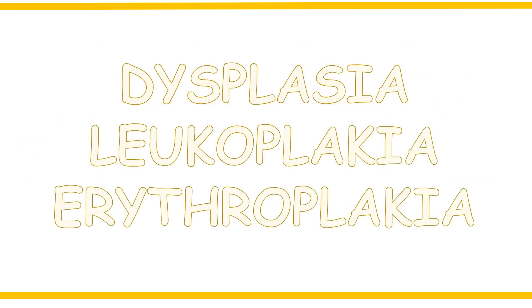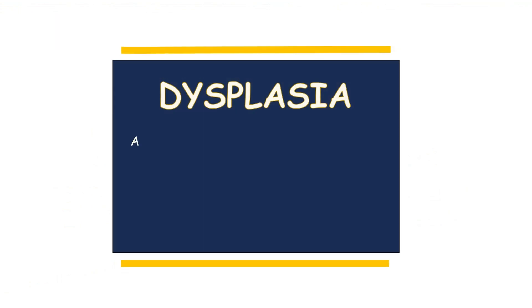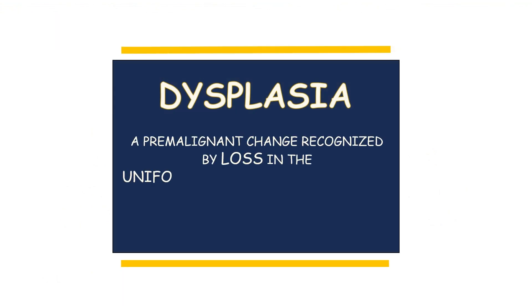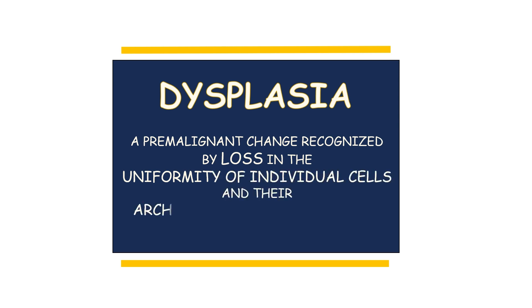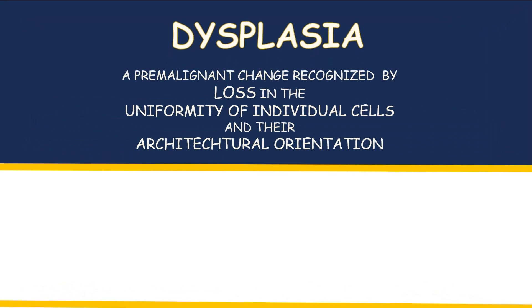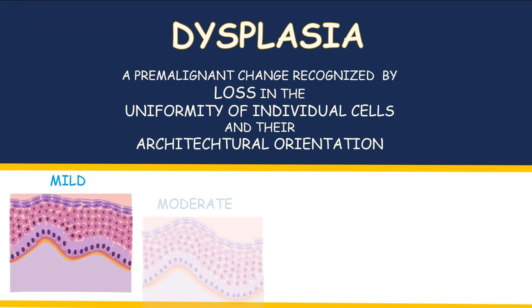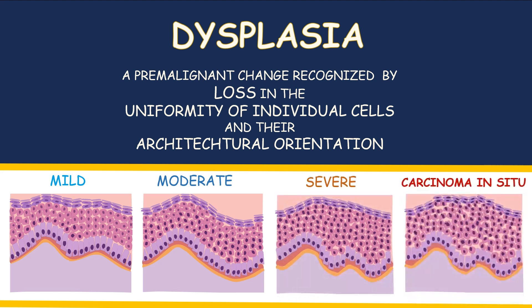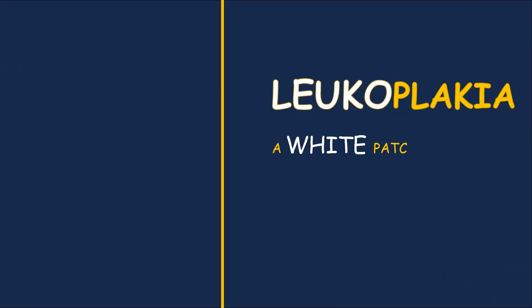The next few terms we'll discuss are histologic and clinical terms related to precancerous lesions. Dysplasia is a pre-malignant change recognized by a loss in the uniformity of individual cells and their architectural orientation. Its four types according to WHO classification are mild, moderate, severe, and carcinoma in situ.